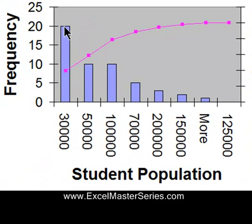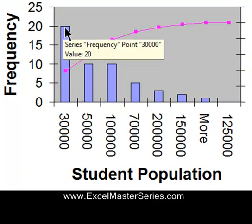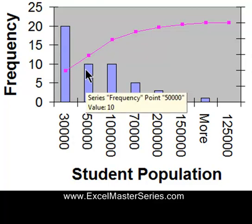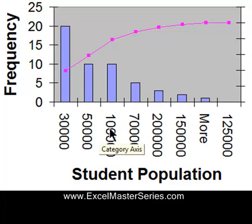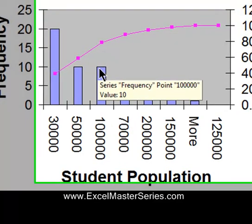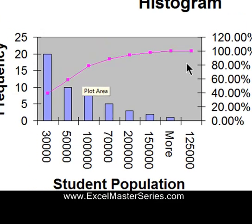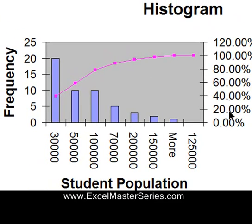And here's a Histogram Pareto style. The largest group with the largest number of schools is on the left. The second largest group has 10 schools with populations of 30,000 to 50,000. The third largest group also has 10 schools, and we can see the cumulative chart in that pink line right there. We can see that 80% of the schools fall in the first three bars.